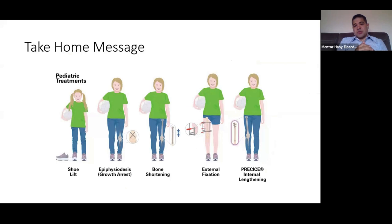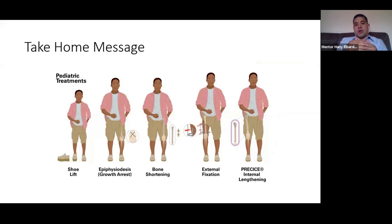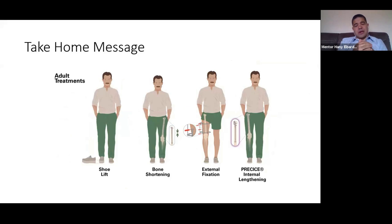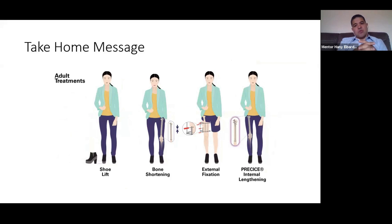Take-home message for the pediatric patient: shoe lift if less than two centimetres; growth arrest/epiphysiodesis for two to five centimetres; limb lengthening for more than five centimetres. For the lengthening procedures, you can use the Ilizarov frame or an intramedullary nail. Personally I prefer the intramedullary nail, as most patients will not be happy having an external frame on their limb for four to five months.